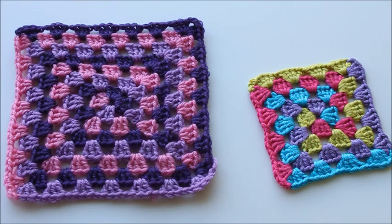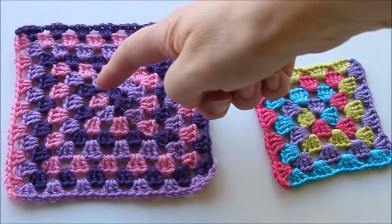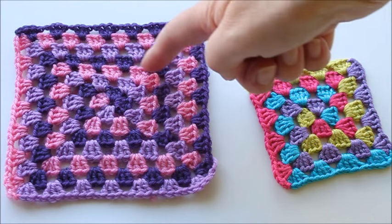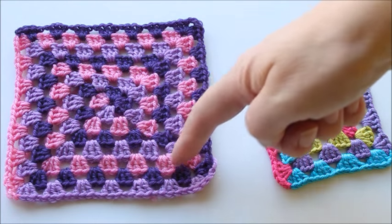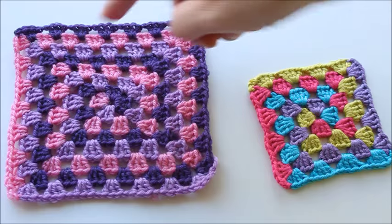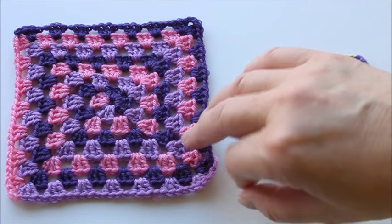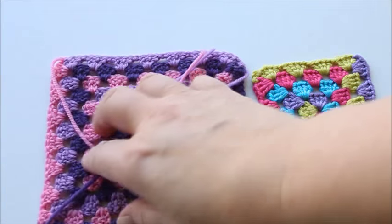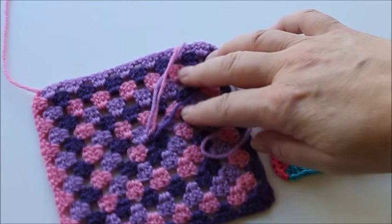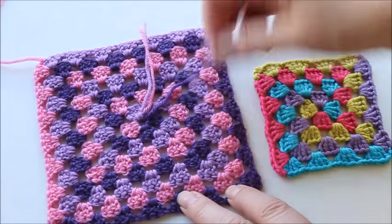One way to make granny squares is to change the colors so that it goes around like a spiral. If you follow one of the colors here, it goes round like that. An advantage with this is that you don't get many ends of yarn to weave in at the end.